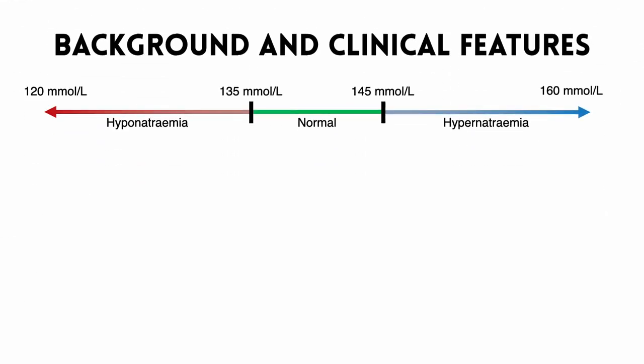Firstly, it's good to remind ourselves about what is normal and what is abnormal. A normal blood sodium level is between 135 and 145 millimoles per litre. Anything outside of this range is abnormal and describes hyponatremia if it's low and hypernatremia if it's high.